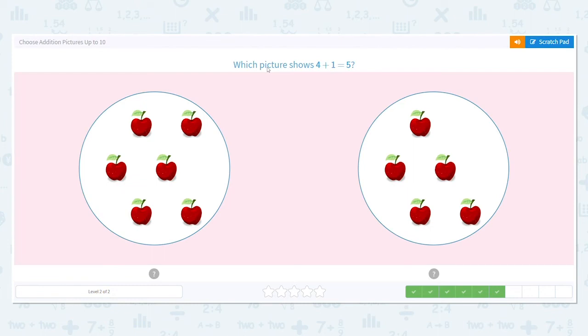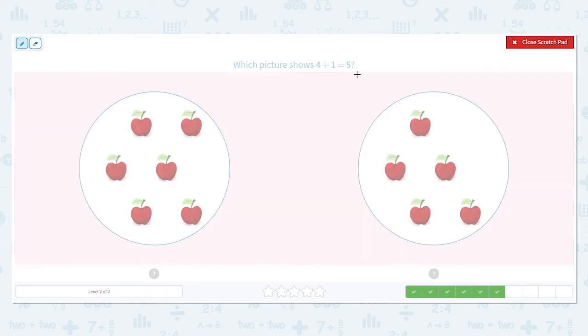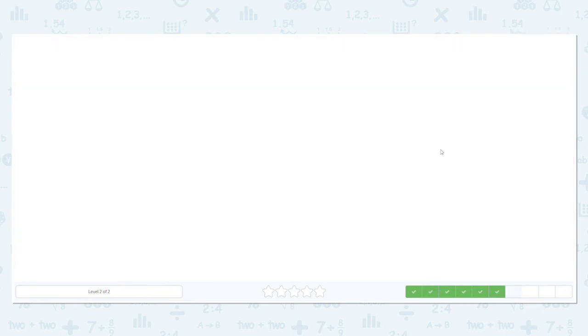Let's keep going. Next, which picture shows 4 plus 1 equals 5? Remember, we want a total of 5 apples. So let's count on this side. 1, 2, 3, 4, 5, 6. So 6 apples on this side. Let's check this side. 1, 2, 3, 4, 5. 5 apples on that side. How many total do we want? 5. So our answer is here.